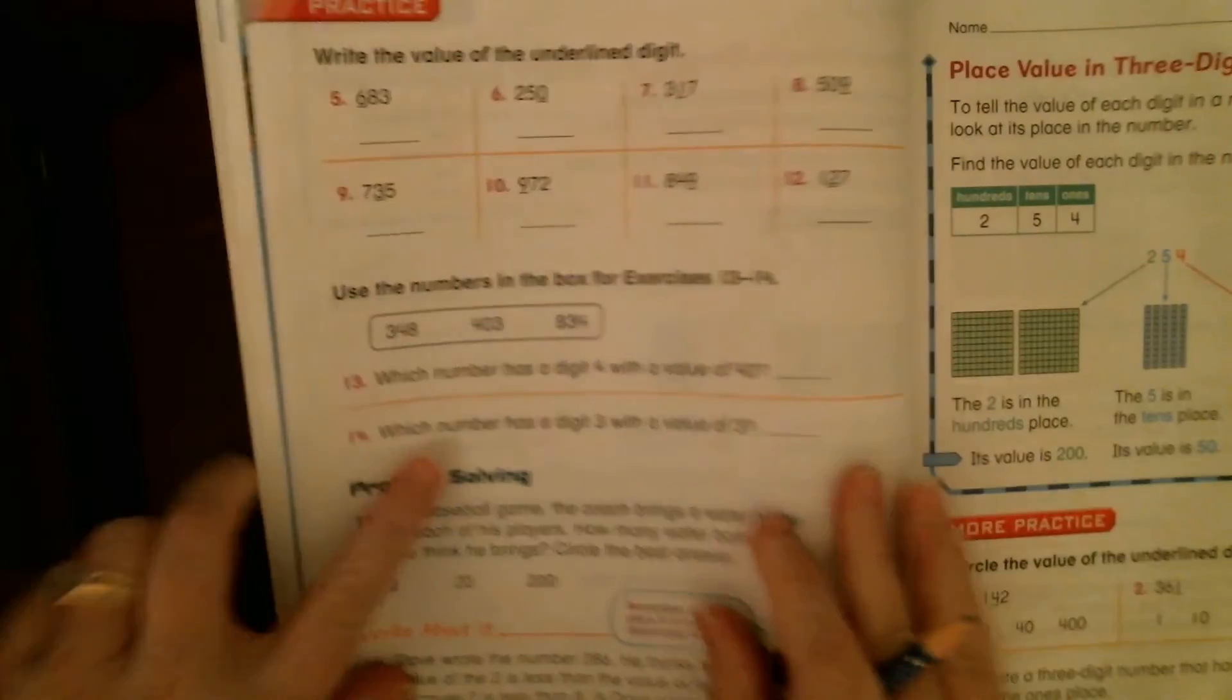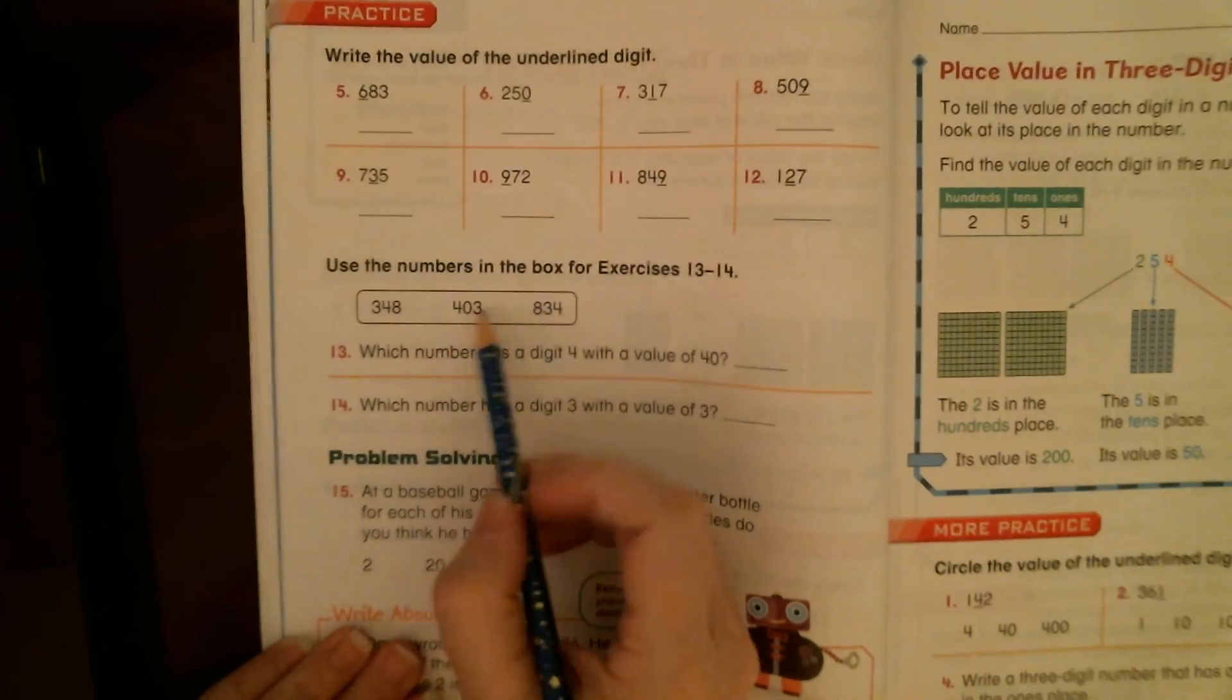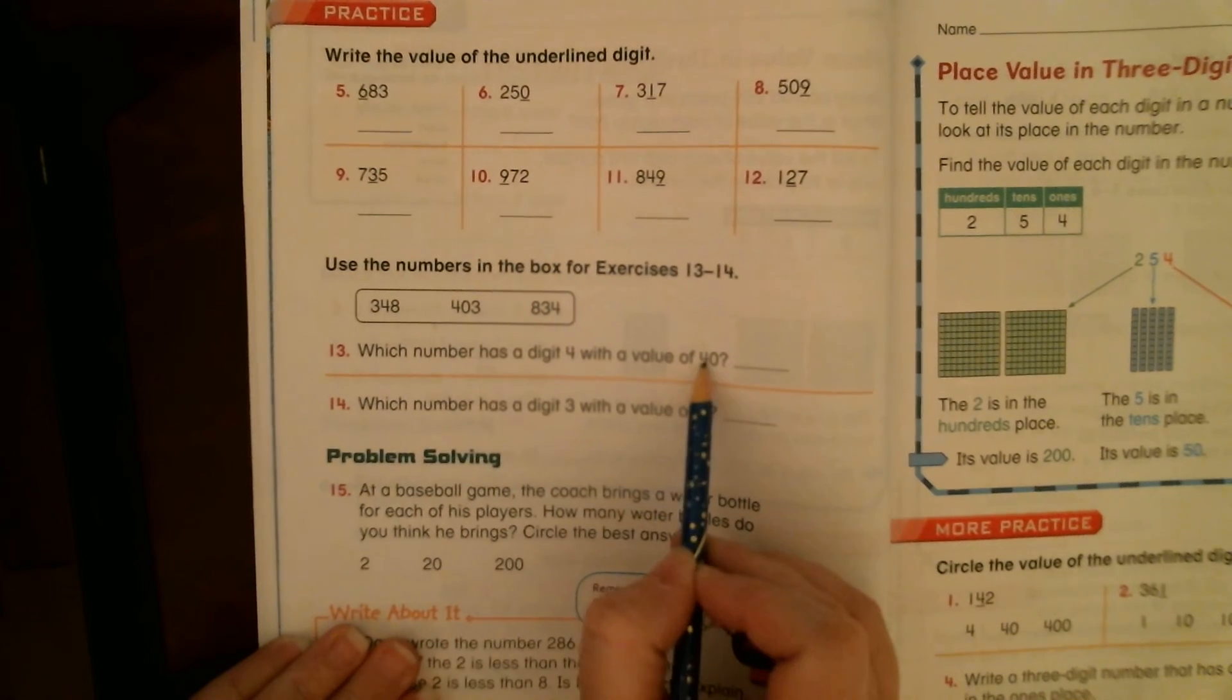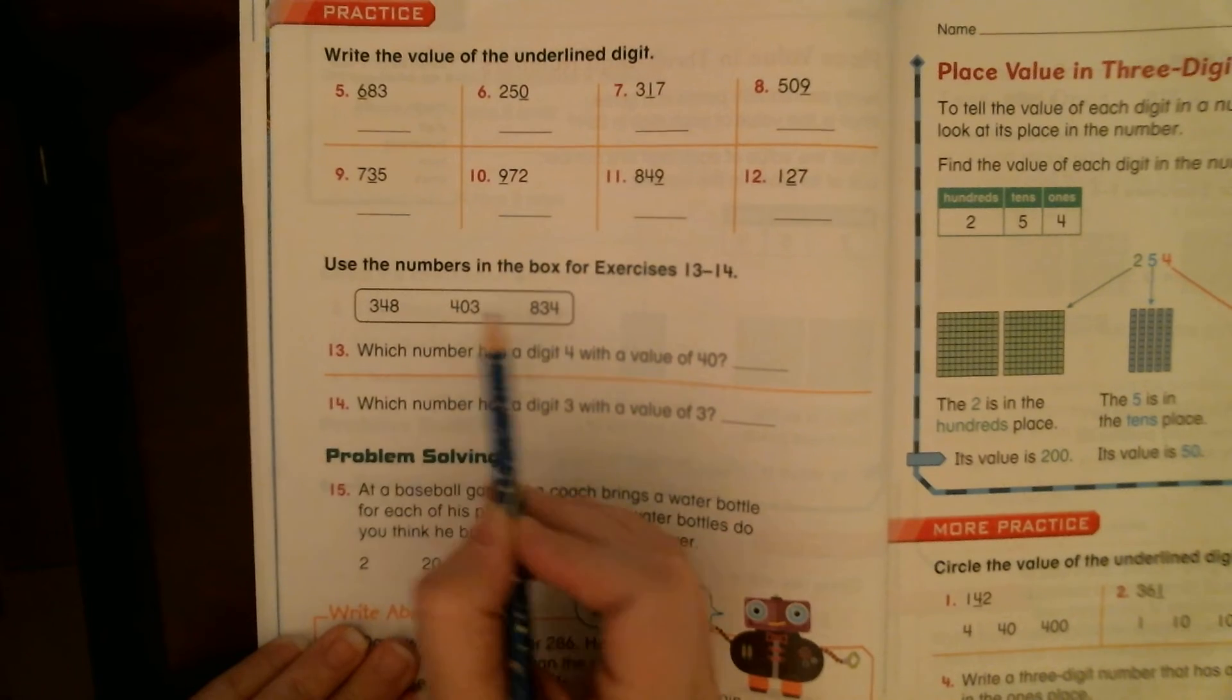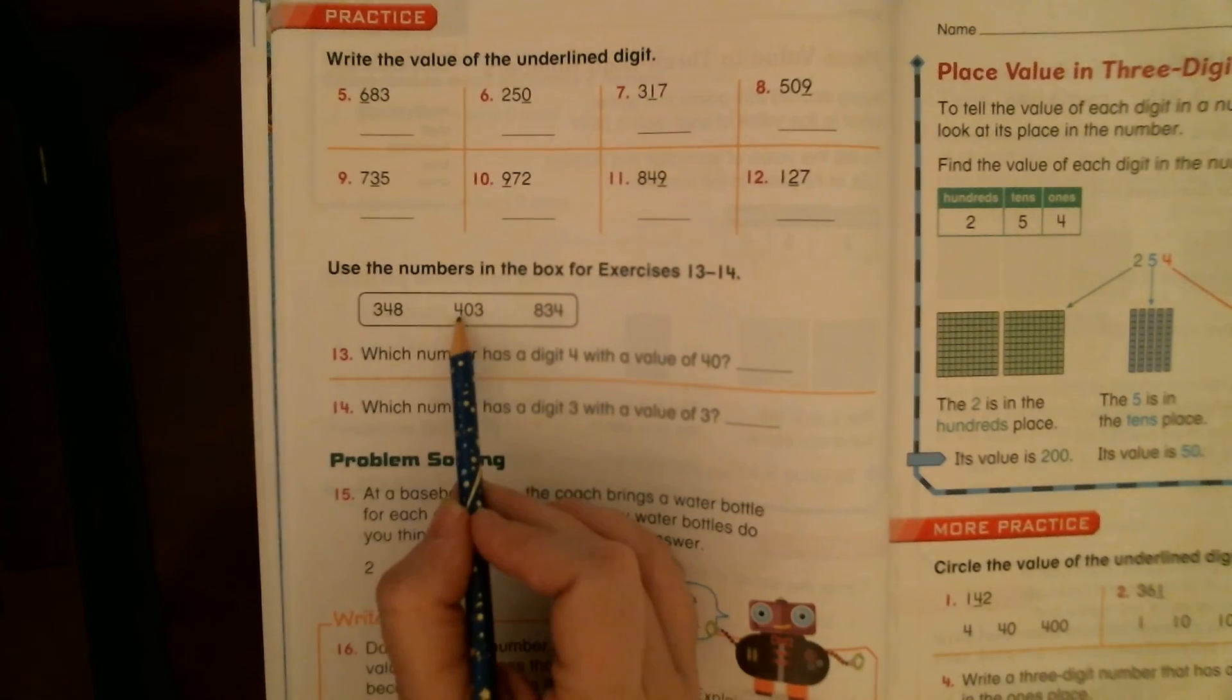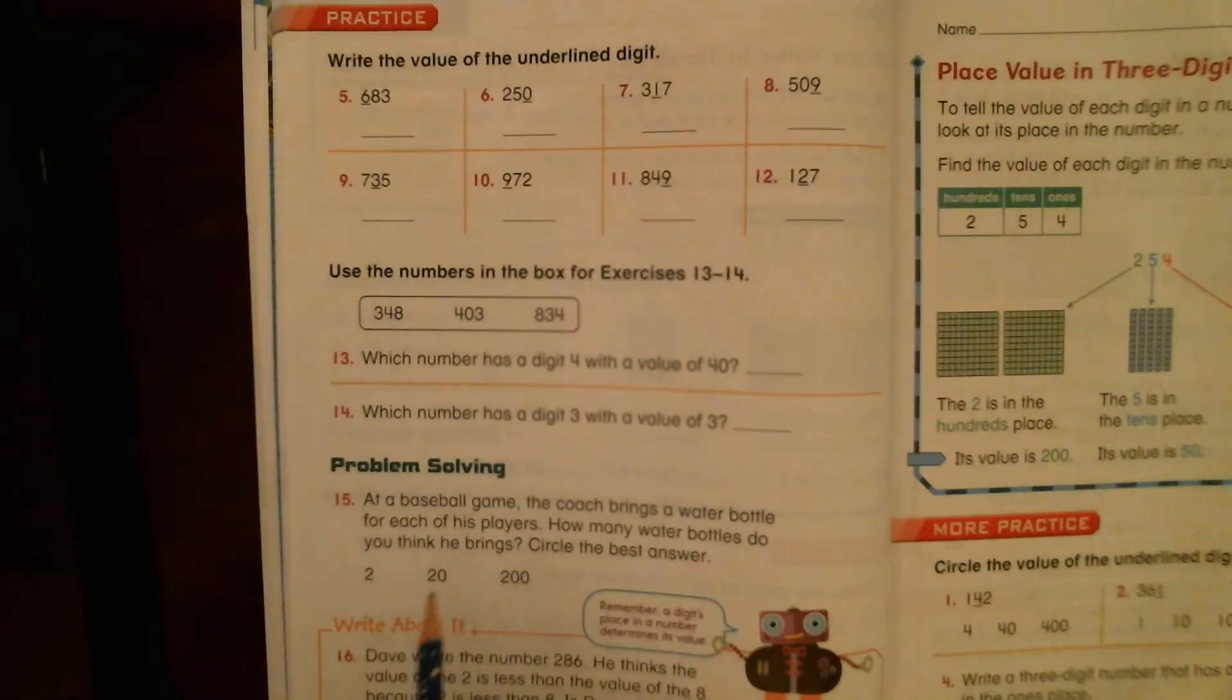You're going to continue on the next side. Same thing, the value of the underlined digit. You're going to use these numbers. They give you a clue for number 13 and 14. You're using one of these numbers. You're either going to write down 348, 403, 834 on those lines.